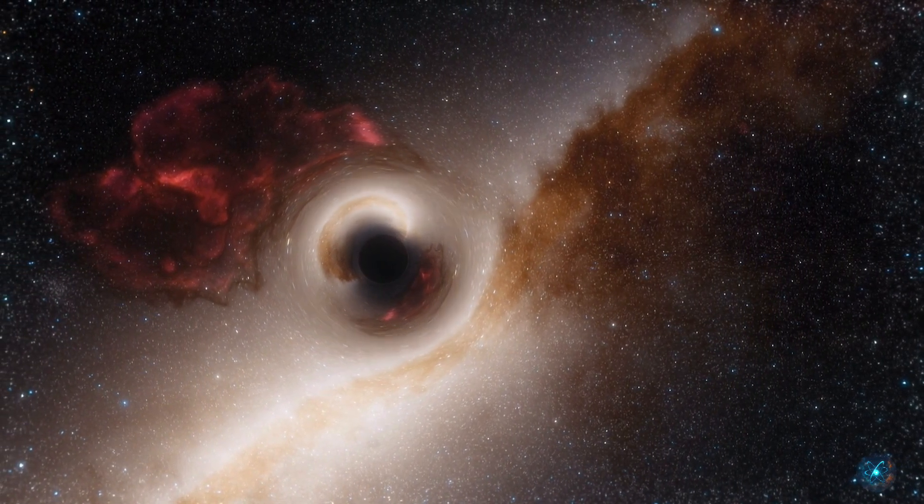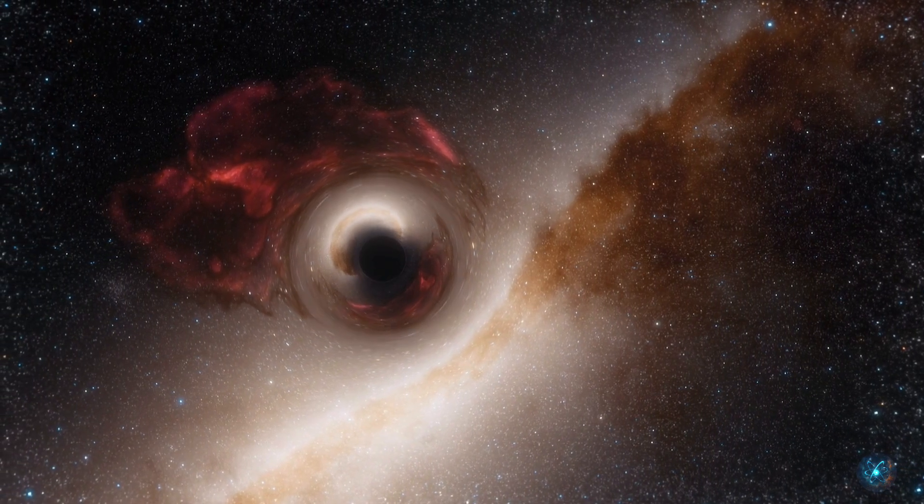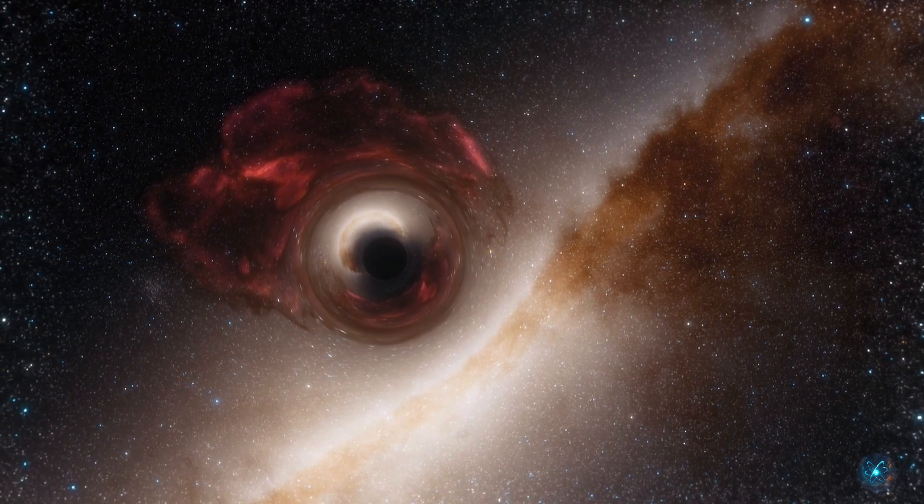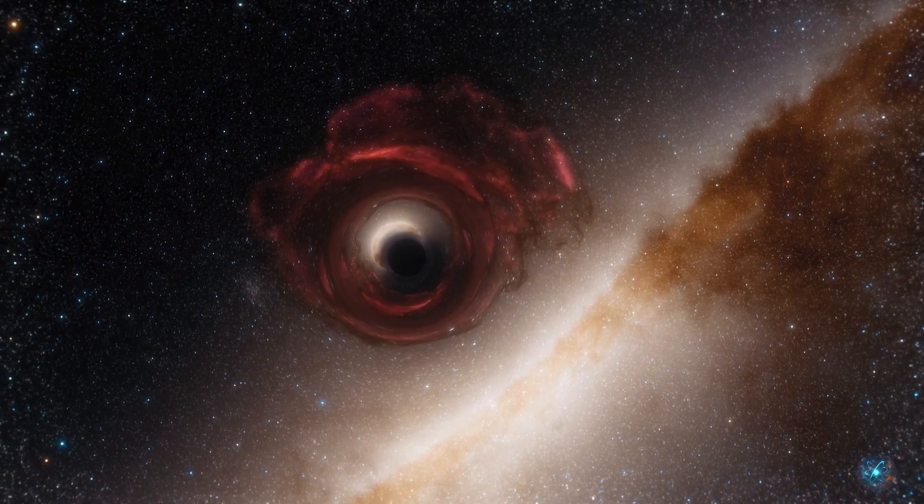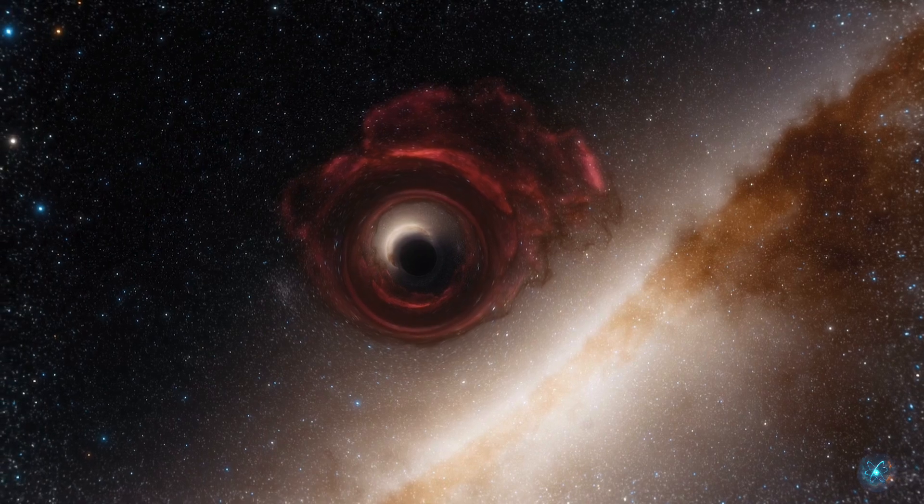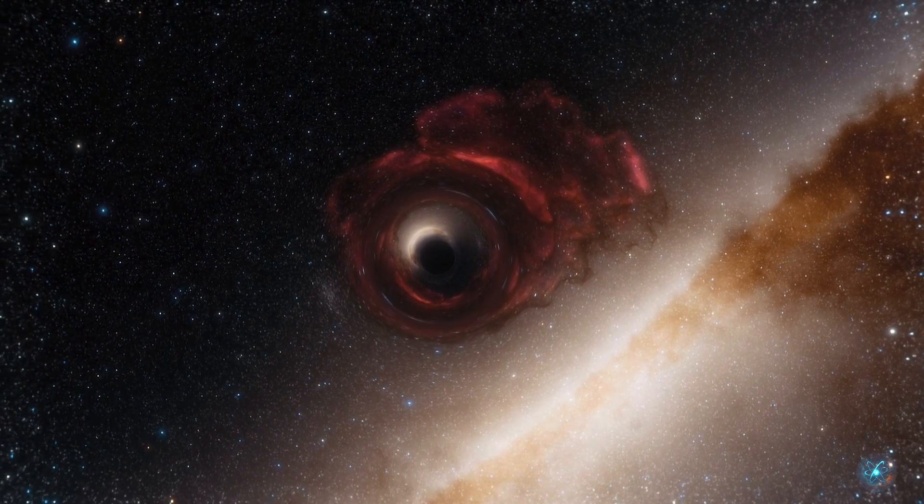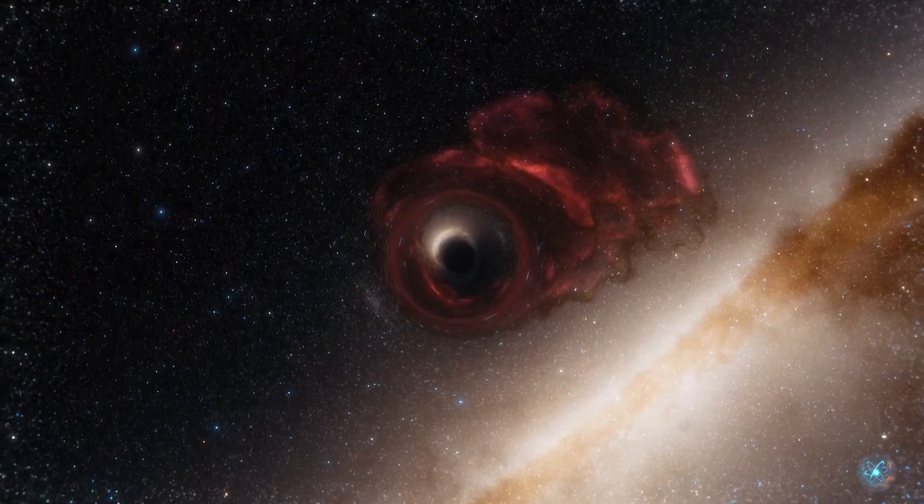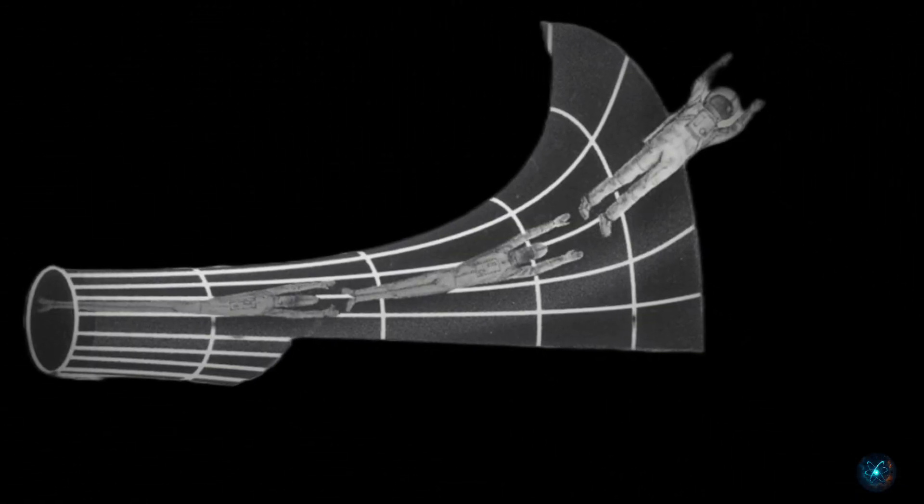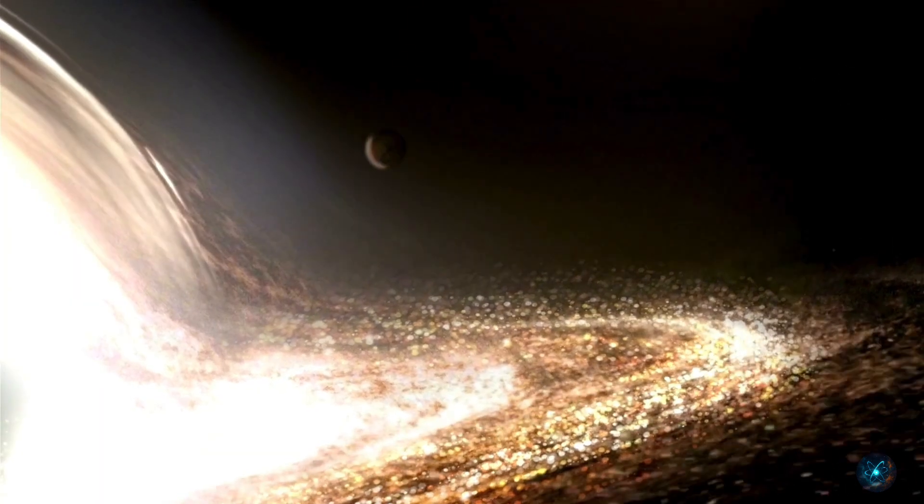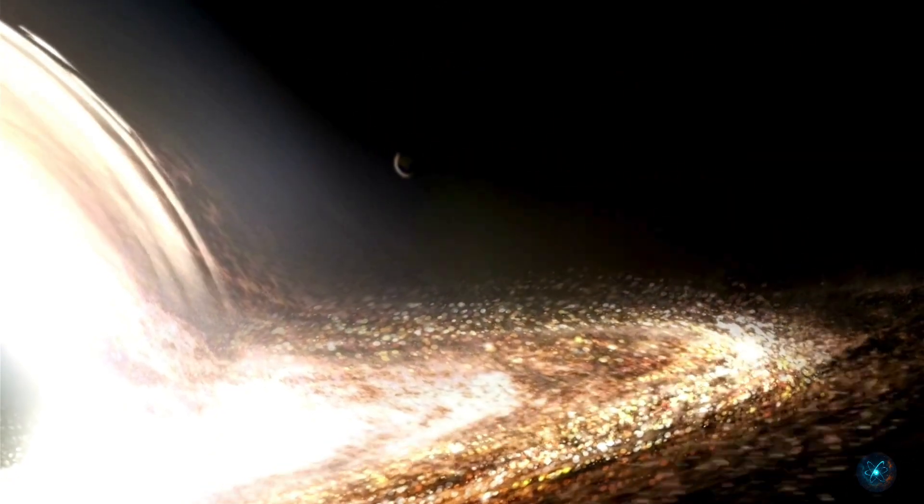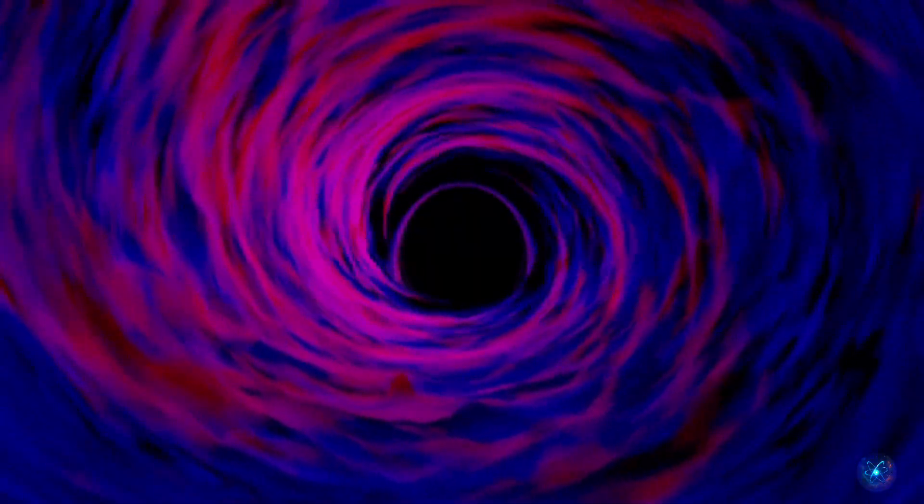This is where things get weird. Once something crosses the event horizon, it's pulled toward the singularity, a place of infinite density. According to Einstein's theory of general relativity, time actually slows down near a black hole. If you watched someone fall in, it would look like they're frozen at the edge. But for the person falling in, they wouldn't notice anything strange until they start stretching in a process called spaghettification. Yes, it's real. Gravity at their feet would be stronger than at their head, stretching them out like spaghetti.